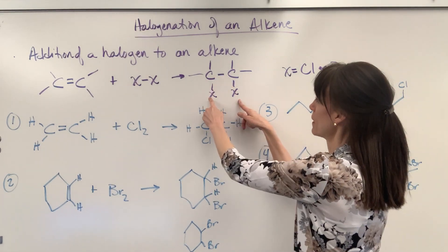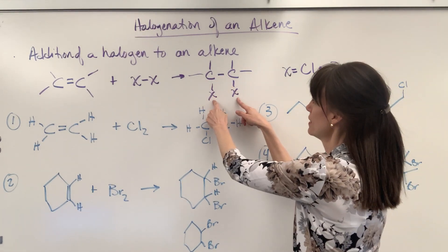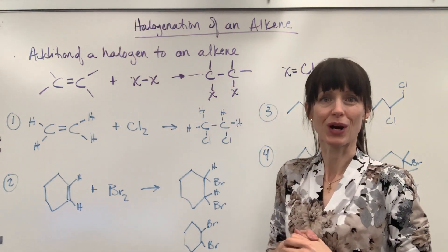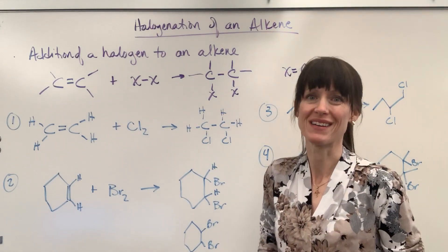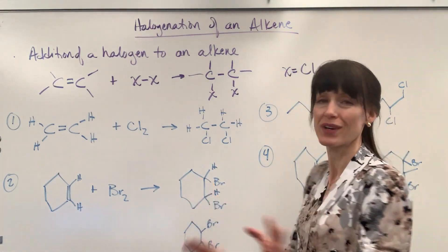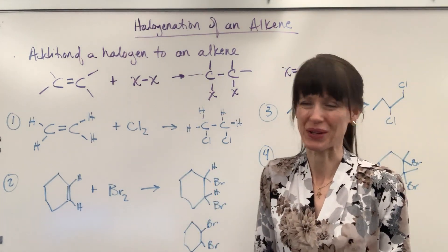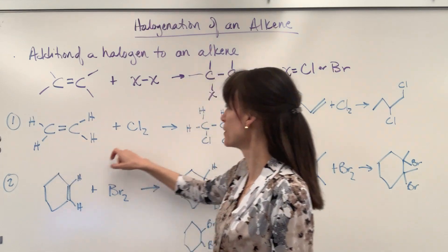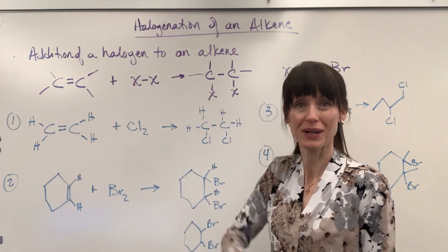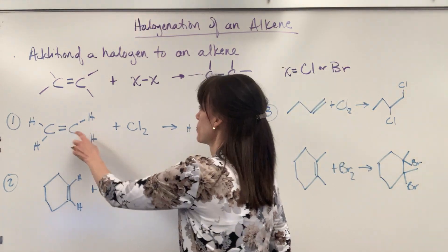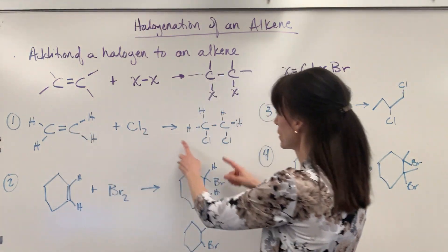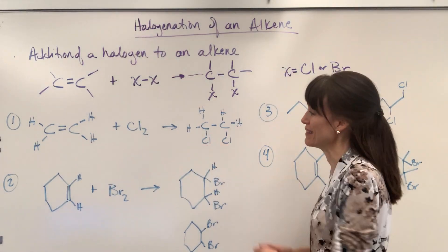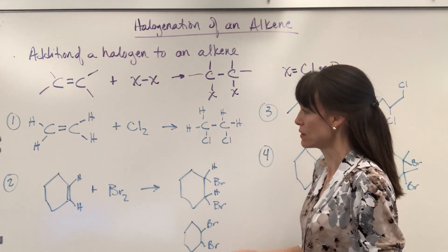You now have a single bond and each of those halogens bonded to the two carbons that were touching the double bond. I have four examples for you. Let's take this ethene — there's my double bond. We're going to add chlorine to it, so that double bond breaks and the chlorine adds to both carbons that were inside the double bond.